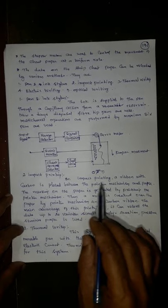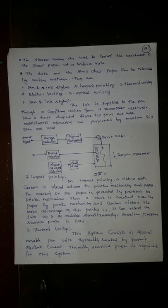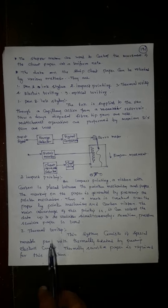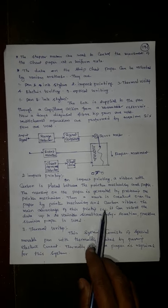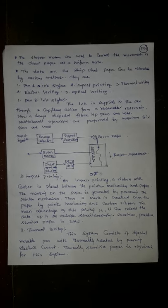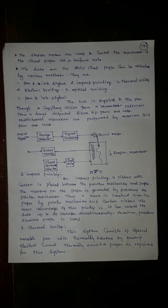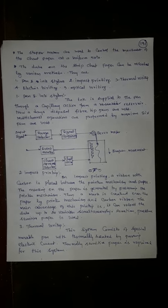In between we are having a ribbon that is dipped with ink, similar to your typewriter machine. In impact printing, a ribbon with carbon is placed between the pointer mechanism and paper. The marking on the paper is generated by pressing the pointer mechanism. Thus a mark is created over the paper by a pointer mechanism and carbon ribbon. The main advantage of this printing is it can record the data up to 20 variables simultaneously.